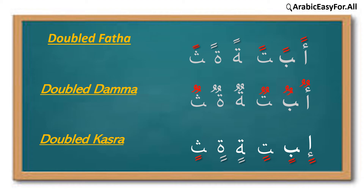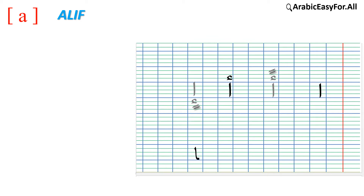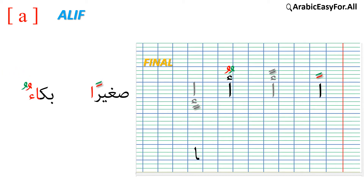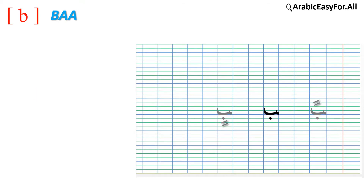Let's go to the details. In its final word position, the doubled فتحة on ألف is pronounced 'أن', like in the example صغيرًا which means 'small' or 'young'. The doubled ضمة on ألف is pronounced 'أن', like in the example بكاءً which means 'to cry'. Another doubled فتحة on ألف: جميعًا which means 'all'.